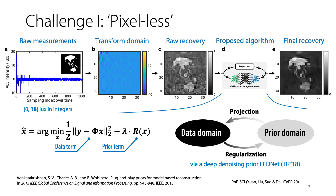This is challenging because the naive construction suffers from severe quantization noise brought by the ambient light sensor. We use the proximal gradient method to iteratively project to the data domain and then regularize it to the image prior domain using a deep denoiser, and eventually get decent recovery.